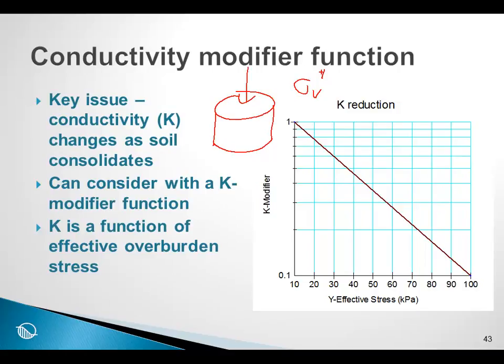Currently in Sigma W, we account for this by allowing you to define what we call a k-modifier function. As the soil consolidates, the pore pressures dissipate, the effective stress increases, and as a result we can decrease the conductivity.